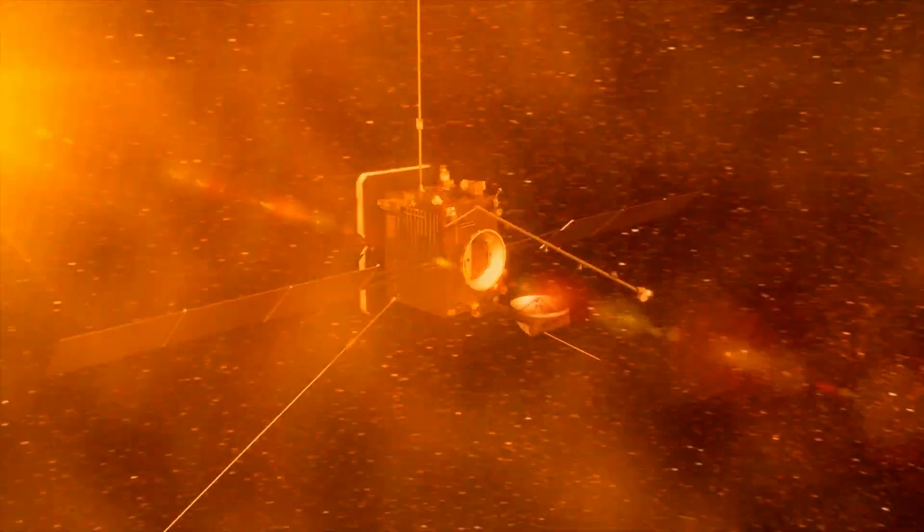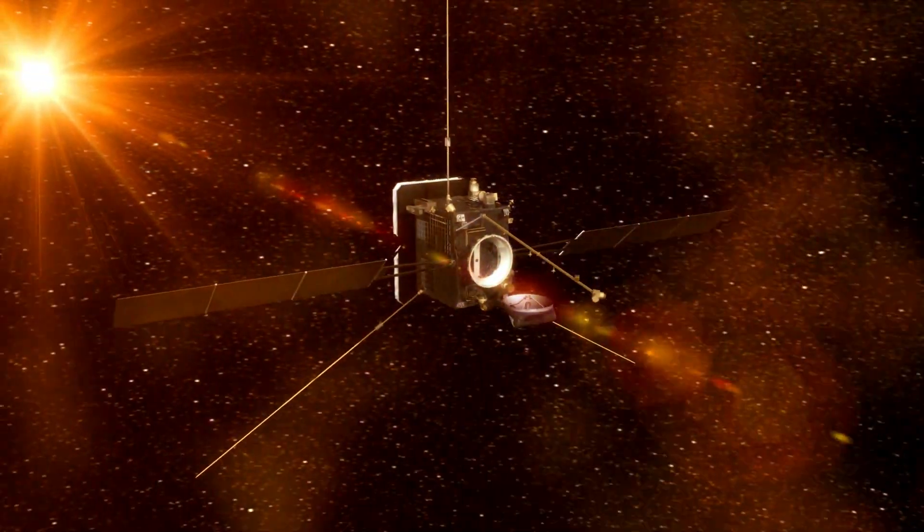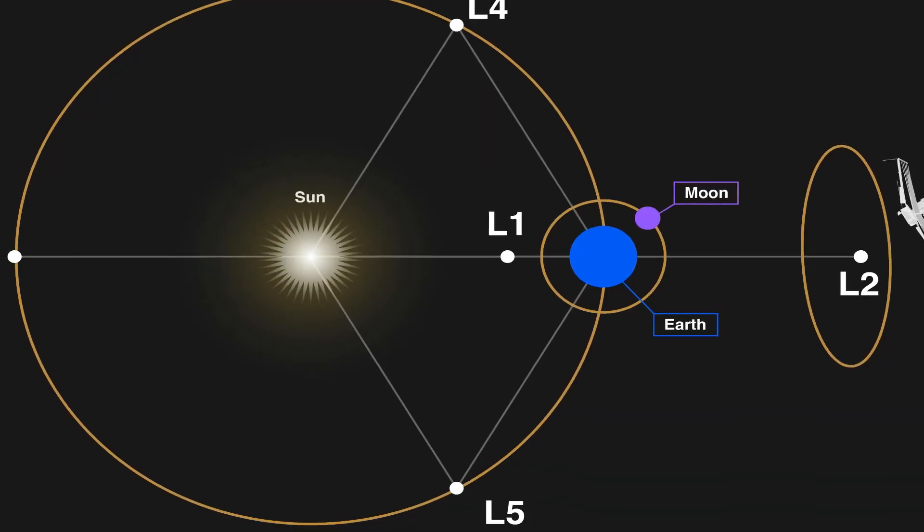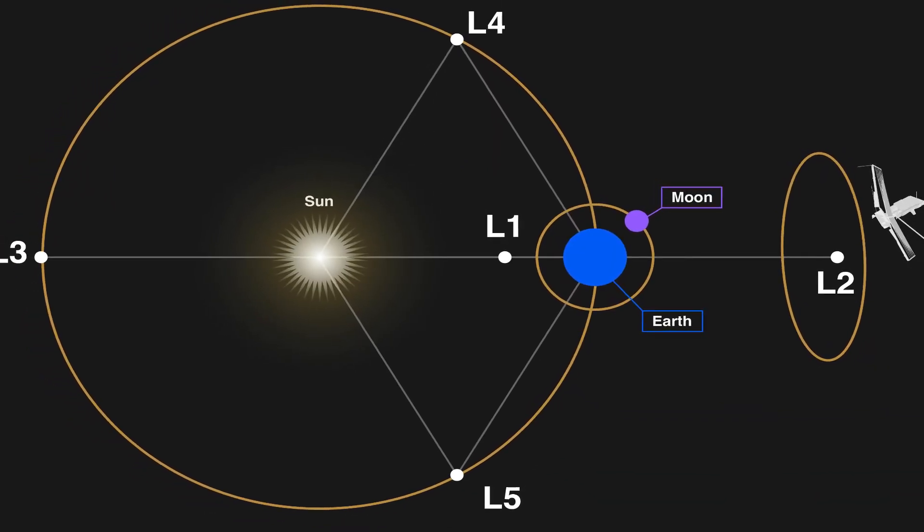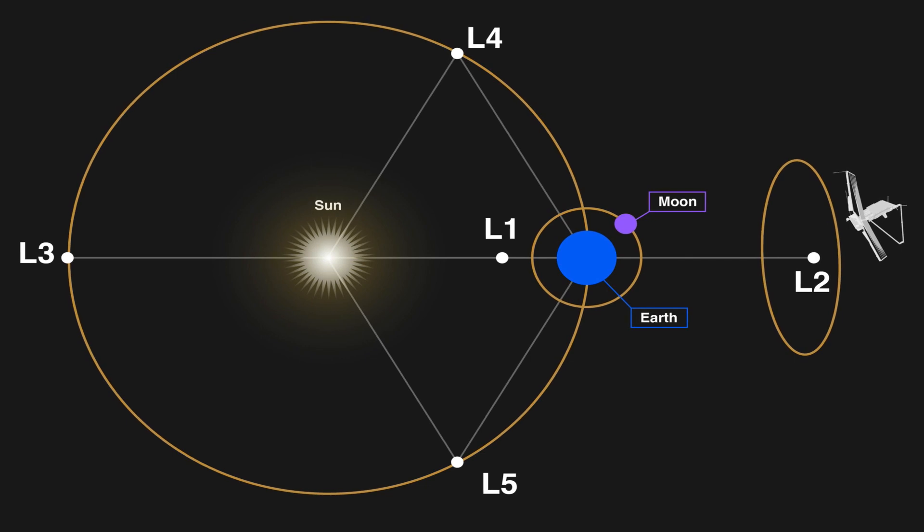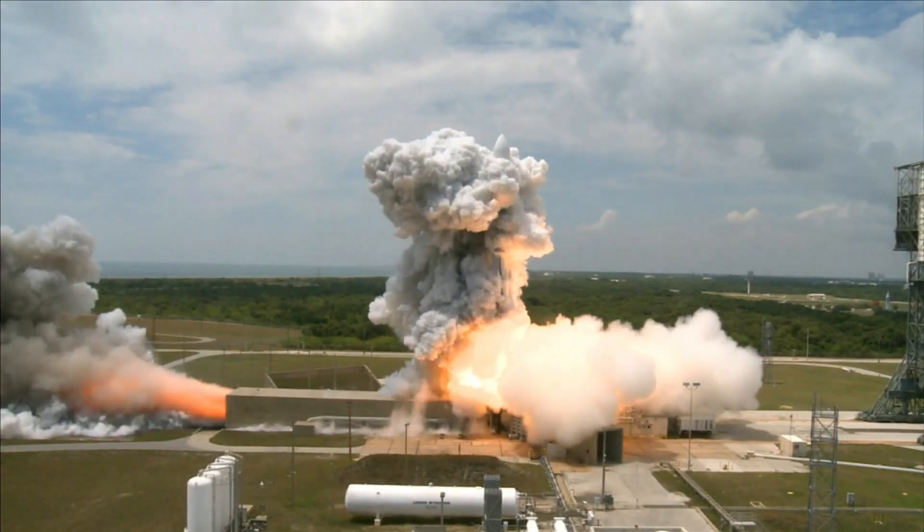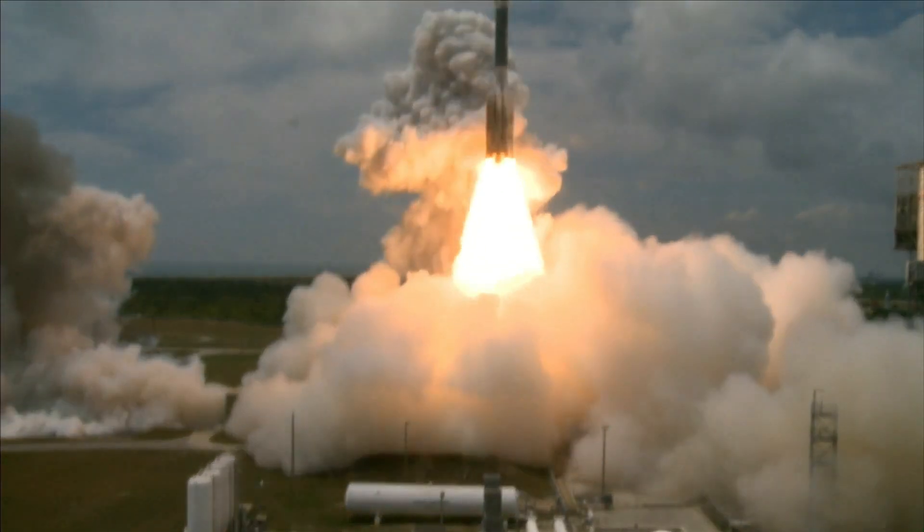This equilibrium allows satellites to remain relatively stable in their position. There are five Lagrangian points surrounding the Sun, with L1 being the most optimal for observing the Sun.